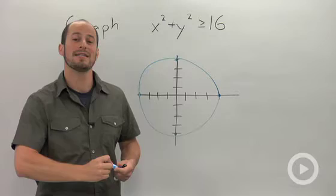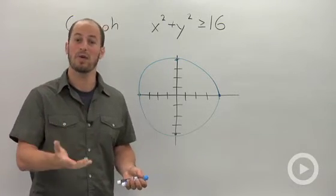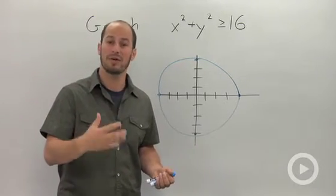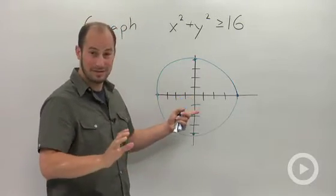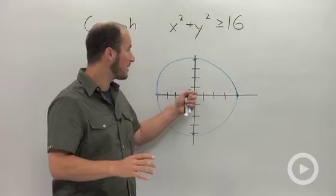So now what we do is choose a point. The origin is going to be the easiest point as long as the origin is clearly not on the curve we're looking at. Here, obviously, the origin isn't on the outside line, so we can plug in 0, 0.